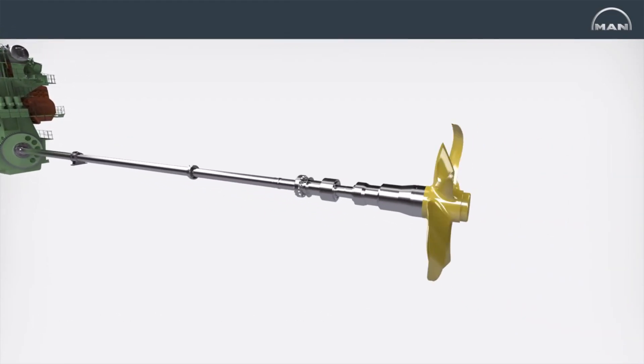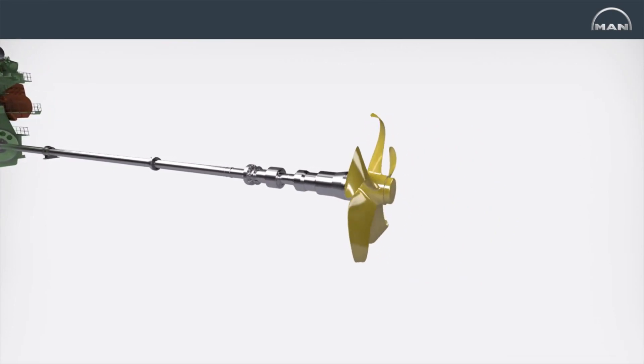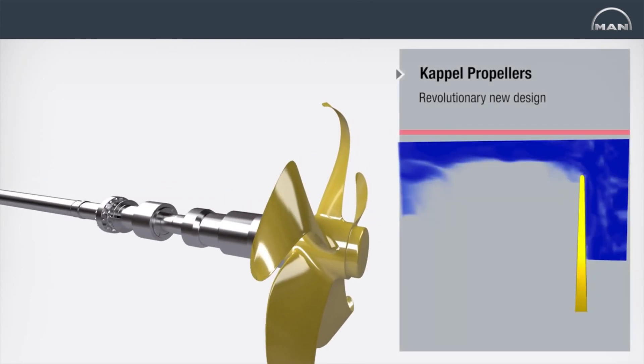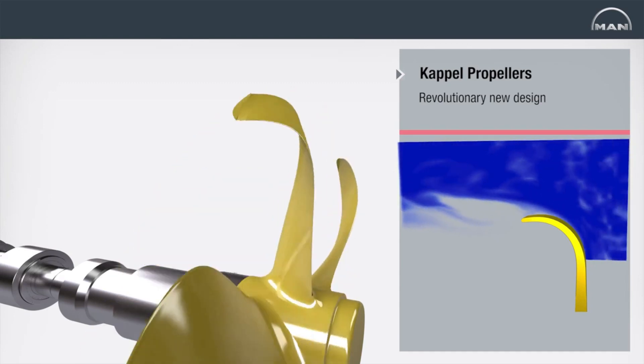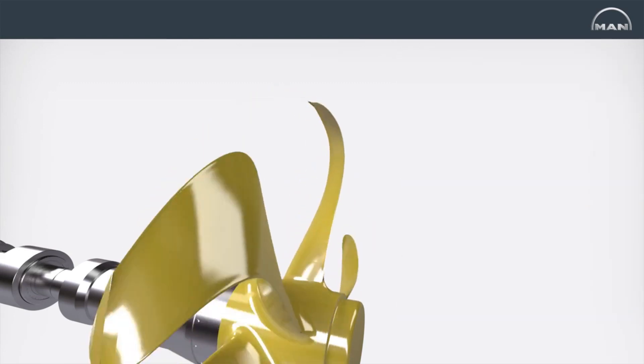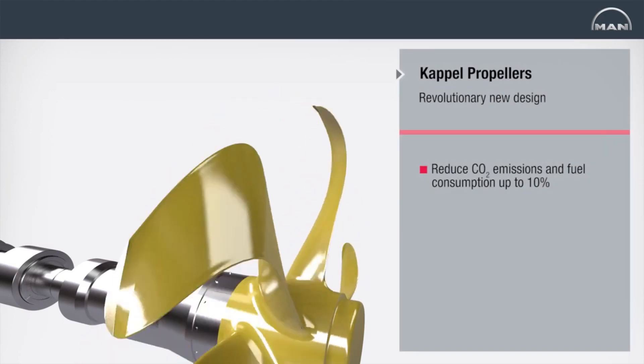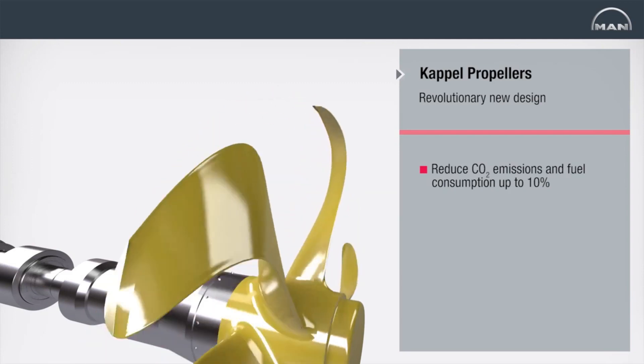The development of the Capell propeller portfolio is the result of a concentrated body of work lasting over two decades. The Capell propeller minimizes the flow of water over each propeller tip, increasing the total efficiency of the propellers compared to conventional units. In combination with the G-Type engine, Capell propellers can reduce CO2 emissions and fuel consumption by up to 10%.